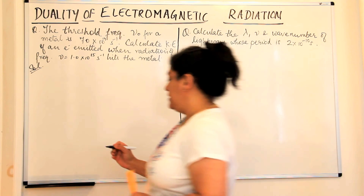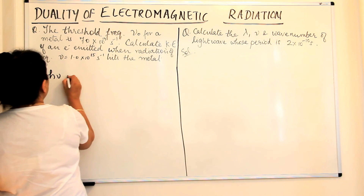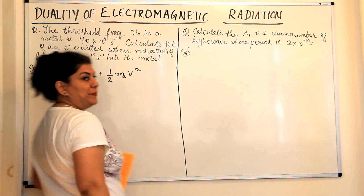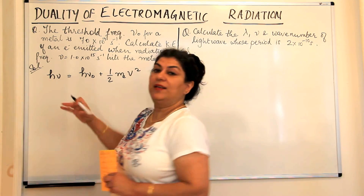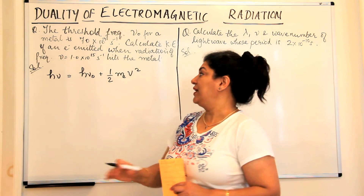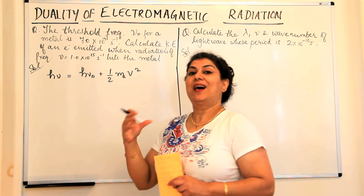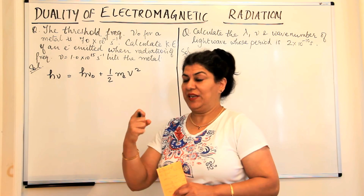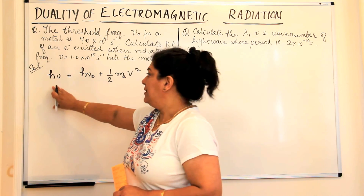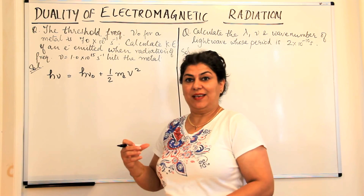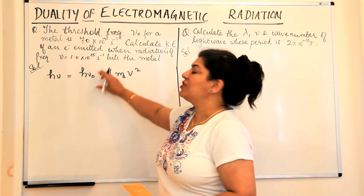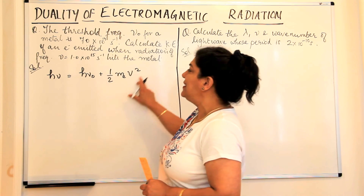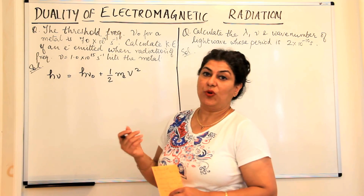The formula we have is hν = hν₀ + ½mₑv², where hν is the energy of the incident radiation in the photoelectric effect. hν₀ is the energy of the photon required to cause the photoelectric effect. So if hν is the total energy, some of that energy is used to extract the electron and the remaining energy becomes the kinetic energy of the photoelectron produced.